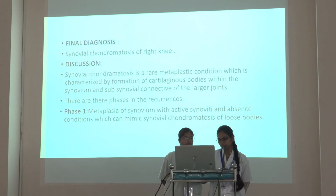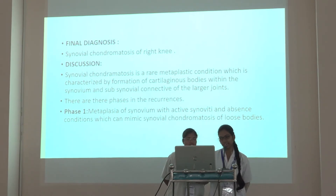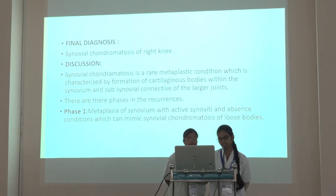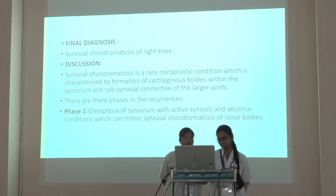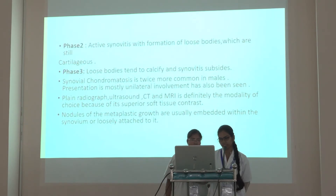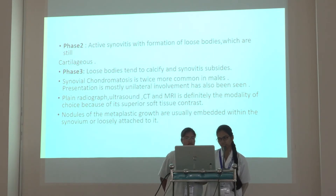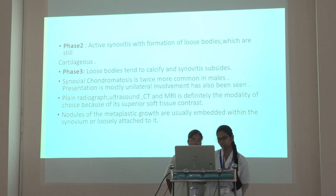Discussion: Synovial chondromatosis is a rare metaplastic condition characterized by formation of cartilaginous bodies within the synovium and sub-synovial connective tissue of the target joints. There are three phases: Phase 1 — active phase: metaplasia of the synovium with active synovitis. Phase 2 — transitional phase: active synovitis with formation of loose bodies. Phase 3 — resolution phase: loose bodies tend to calcify and synovitis subsides.